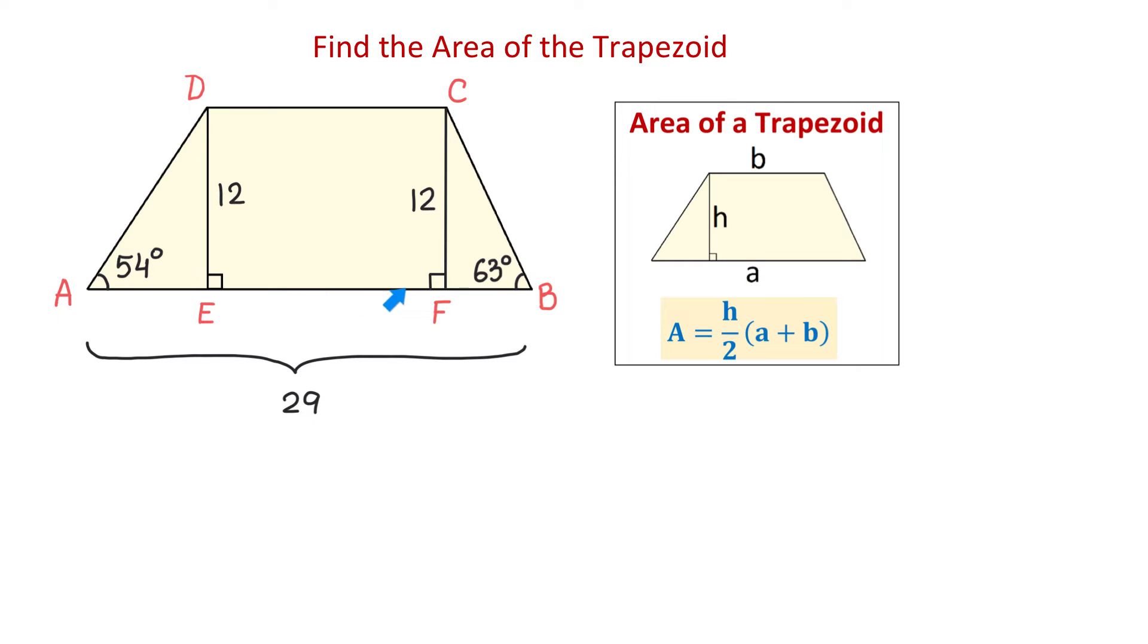Now, to find E, F, first we will find A, E, and F, B, and we will subtract them from 29 units. To find A, E, we will use trigonometry. In this right triangle, we are given an angle and the opposite side, and we need to find the adjacent side. So, to find this adjacent side, we will use the tangent function.